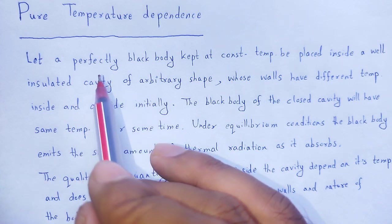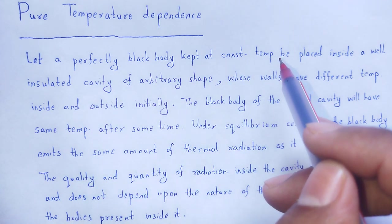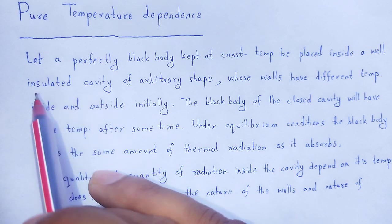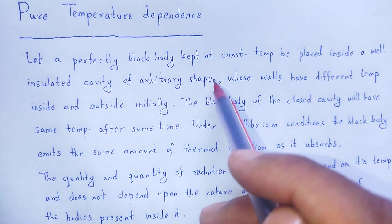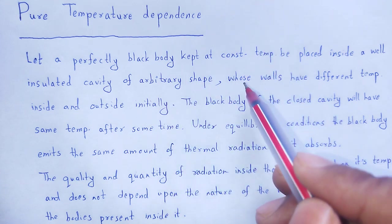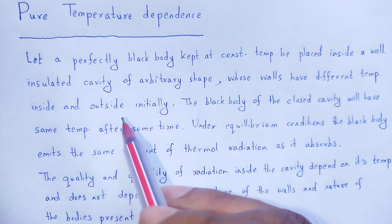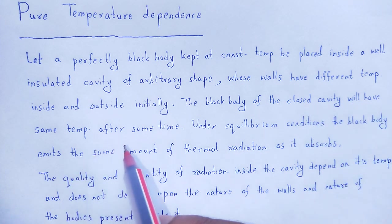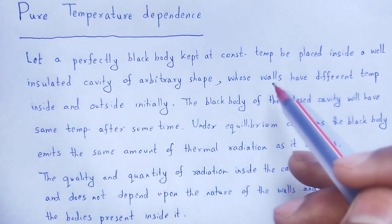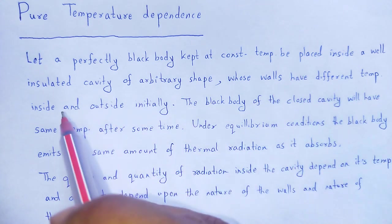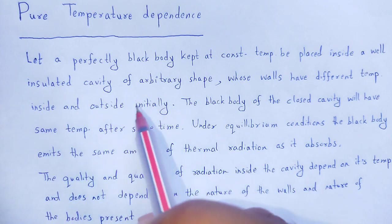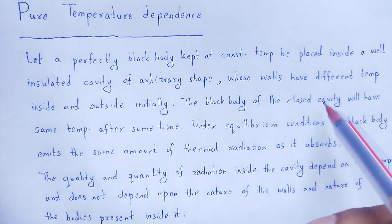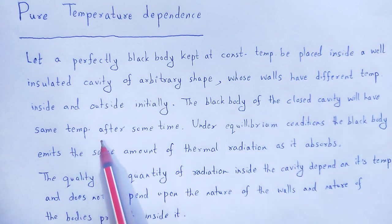Let a perfectly blackbody be kept at constant temperature, placed inside a well-insulated cavity of arbitrary shape. Therefore, the walls have different temperatures inside and outside initially. The blackbody and the closed cavity will have the same temperature after some time — initially the temperature differs inside and outside, and after some time it will be at equilibrium.